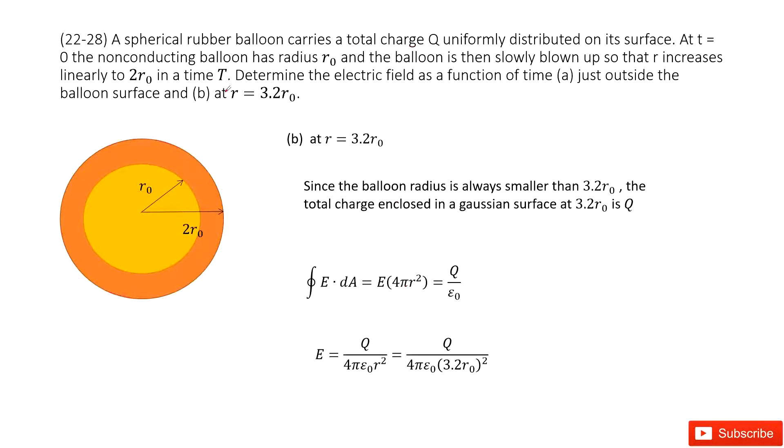The next one tells you find the electric field at R equal to 3.2R₀. You can see it is there. If we draw a Gaussian surface, look like this one.